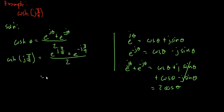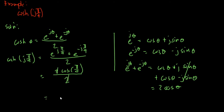So we can simplify our expression further into 2·cosine, where our theta is now π/4 — it is π/4 — all over 2.